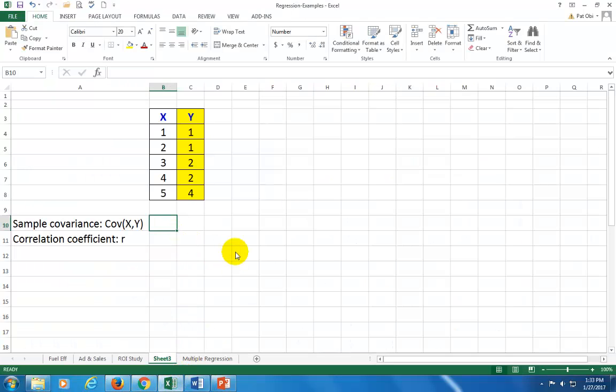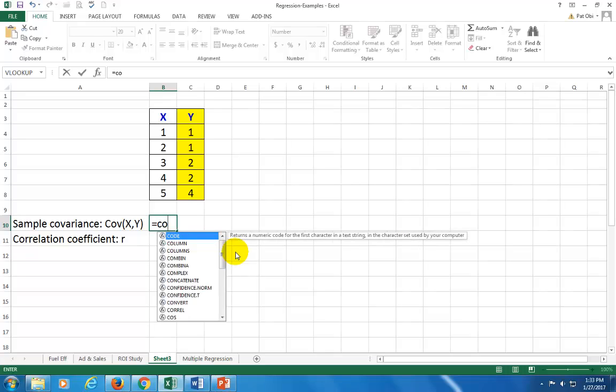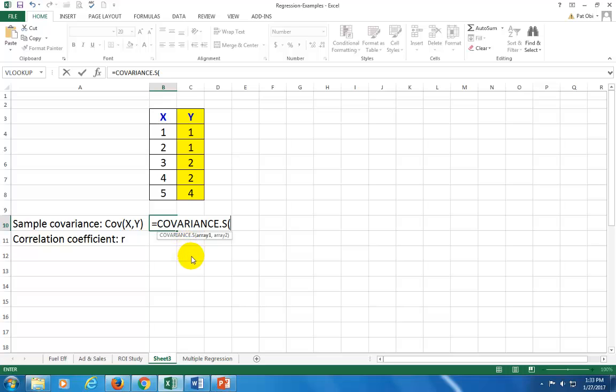We can use Excel to easily calculate covariance as well. The function is equal covar. Before you finish typing it, it gives you the function for population covariance and sample covariance. You want to click on sample covariance. Then it says array 1, highlight the values, comma, array number 2, highlight these, close parenthesis, enter. And that's your covariance.